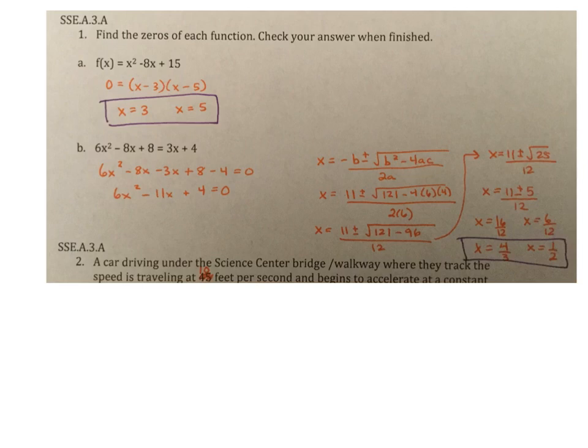You could also use quadratic formula, you could also use completing the square if you wanted to, but I went ahead and factored and it factors nicely to x minus 3, x minus 5, and then solved those for zero and I got x equals 3, x equals 5.